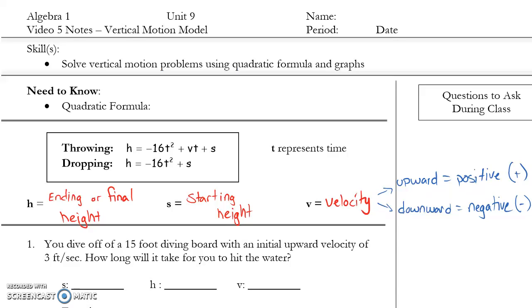So the final video for this chapter is going to be about vertical motion model. This is an application of the quadratic formula and more specifically an application on solving quadratic equations. The main thing we need to know is how to use the quadratic formula, but in addition to that we also need to remember how to use our graphing calculator and how to solve by graphing. So we'll be doing those two things as we go through our lesson in this video.